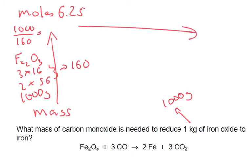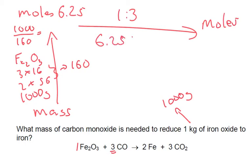Over we go to moles on this side. What's our ratio? We've got 1 iron oxide to 3 carbon monoxide, so it's a 1 to 3 ratio. If we've got 6.25, we times that by 3 — so 6.25 times 3 divided by 1 — and we get 18.75.